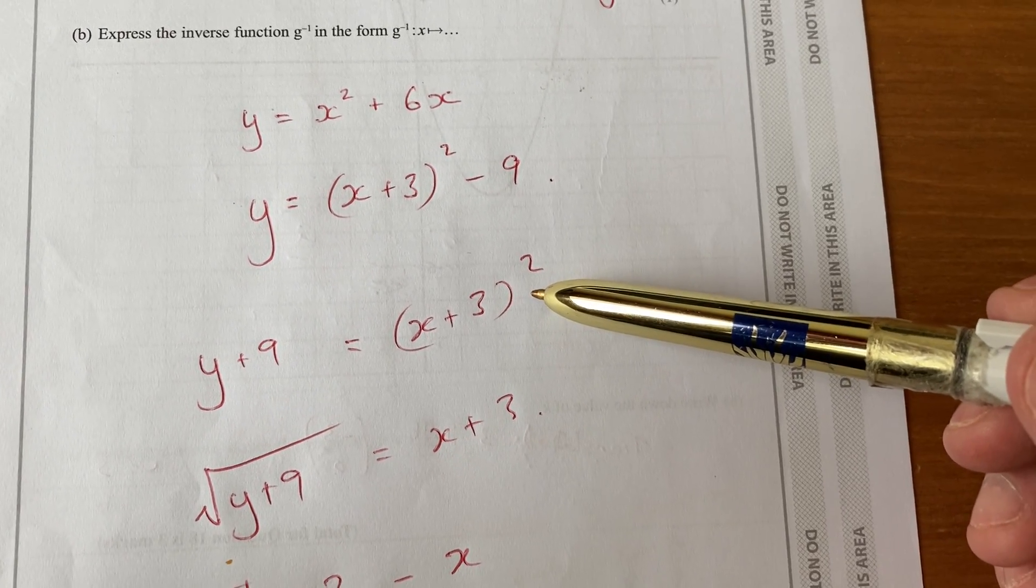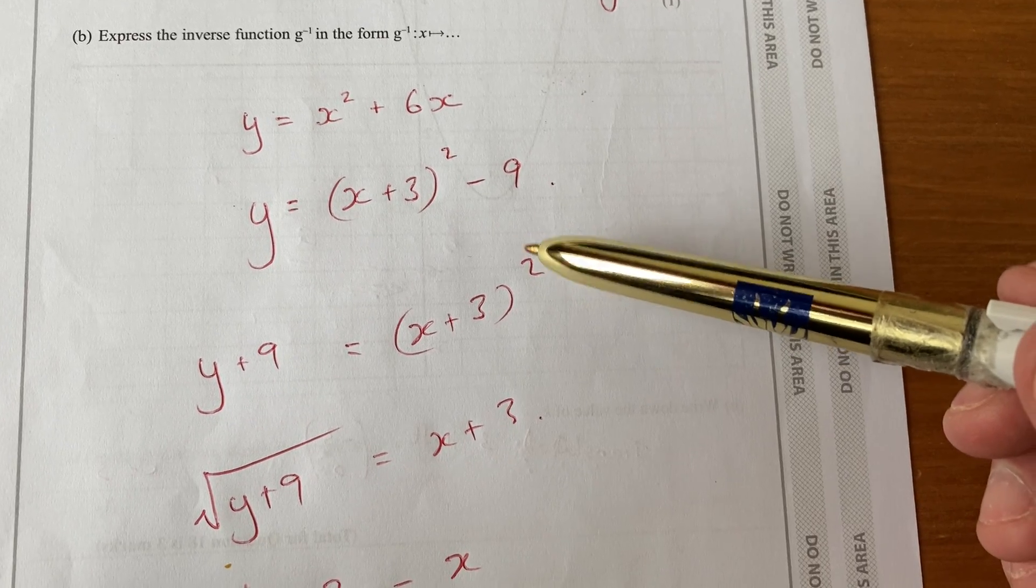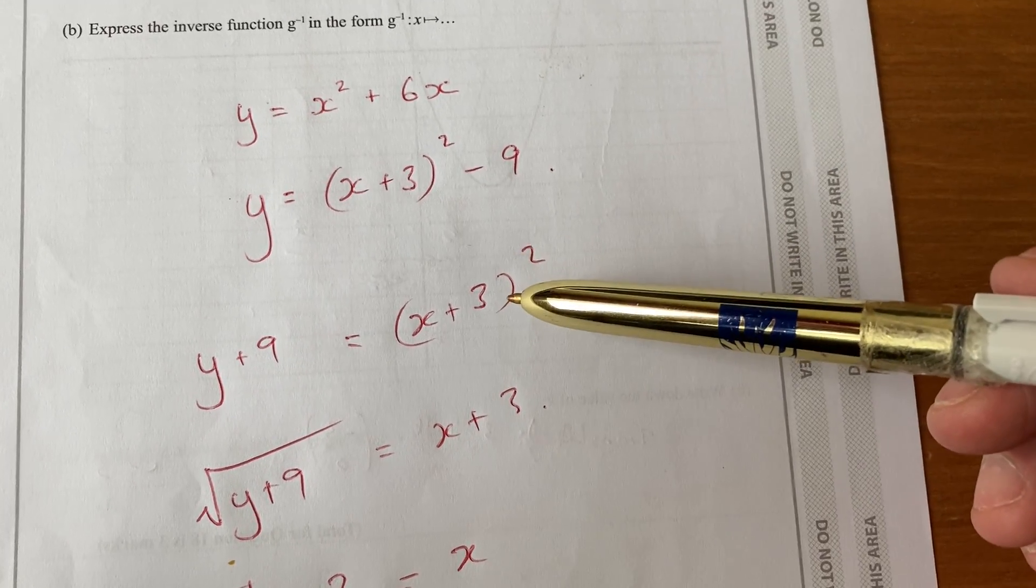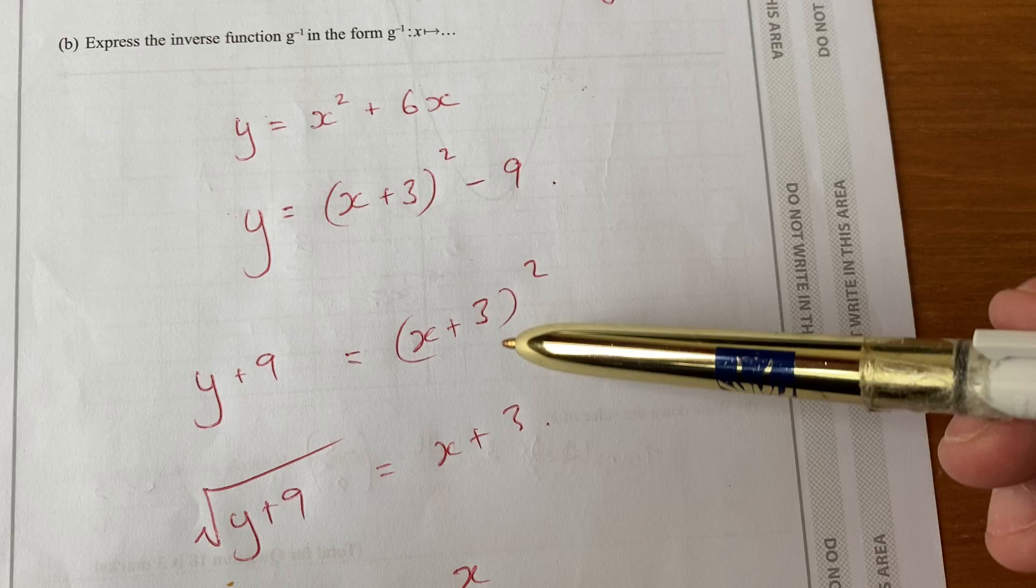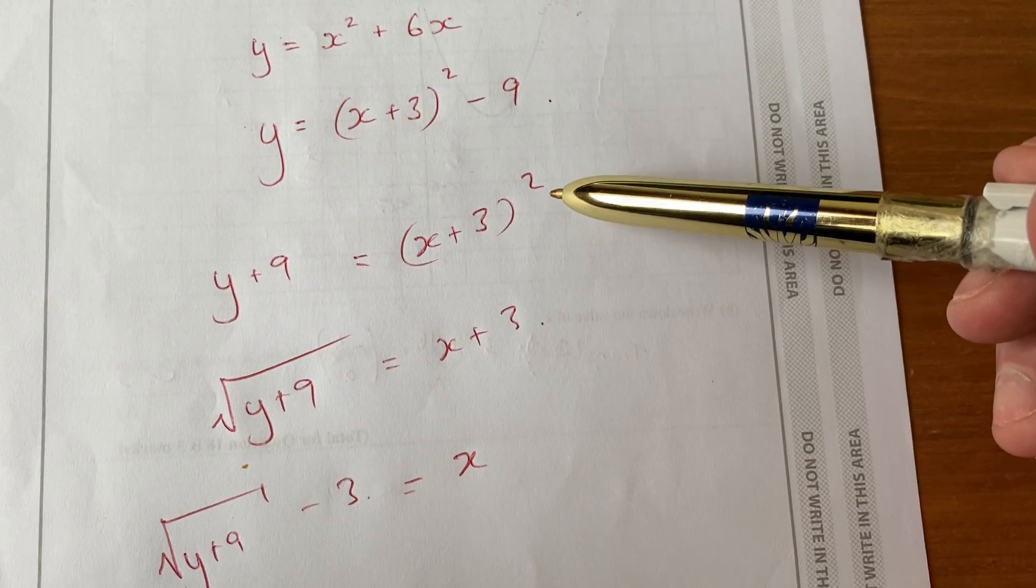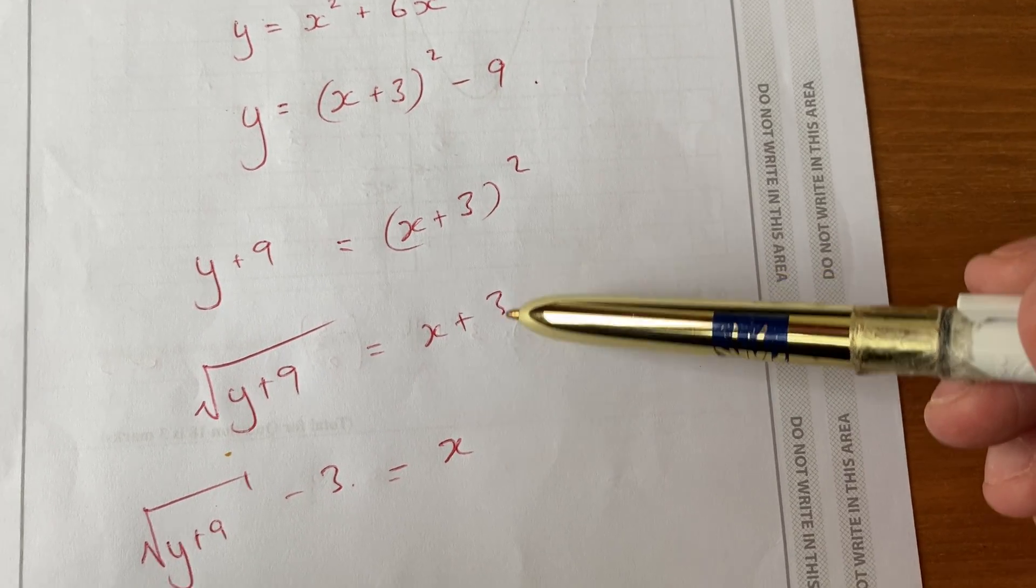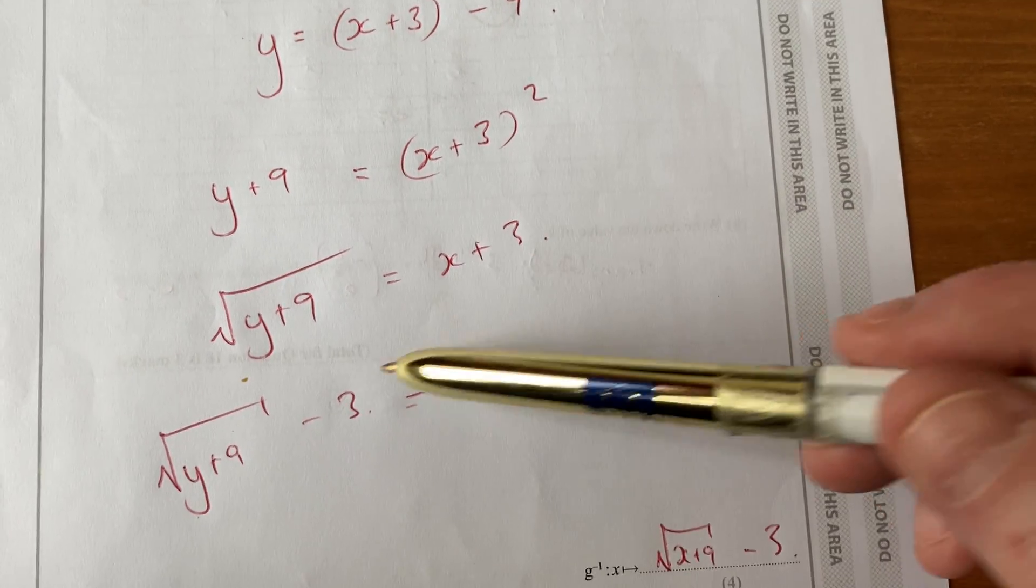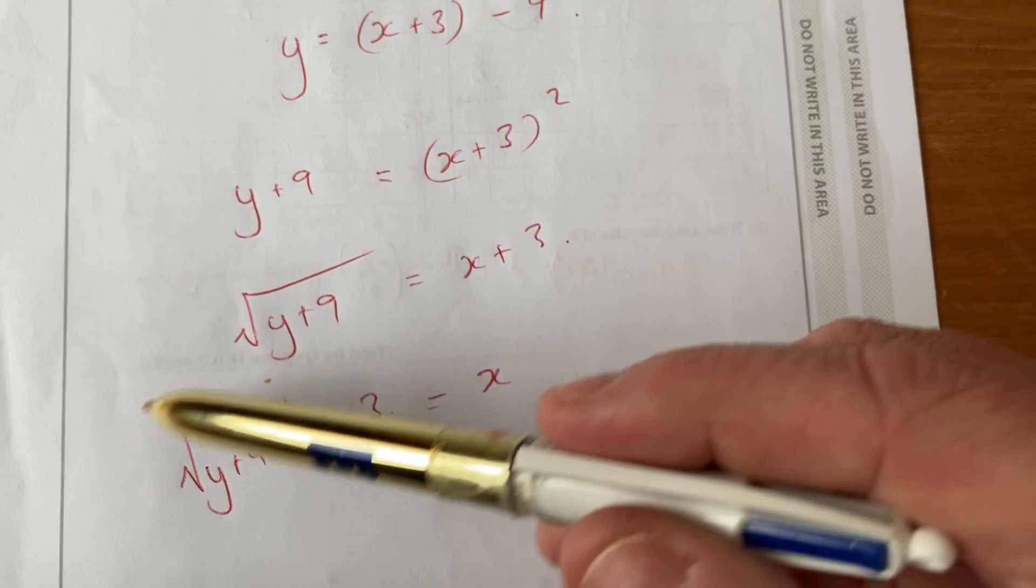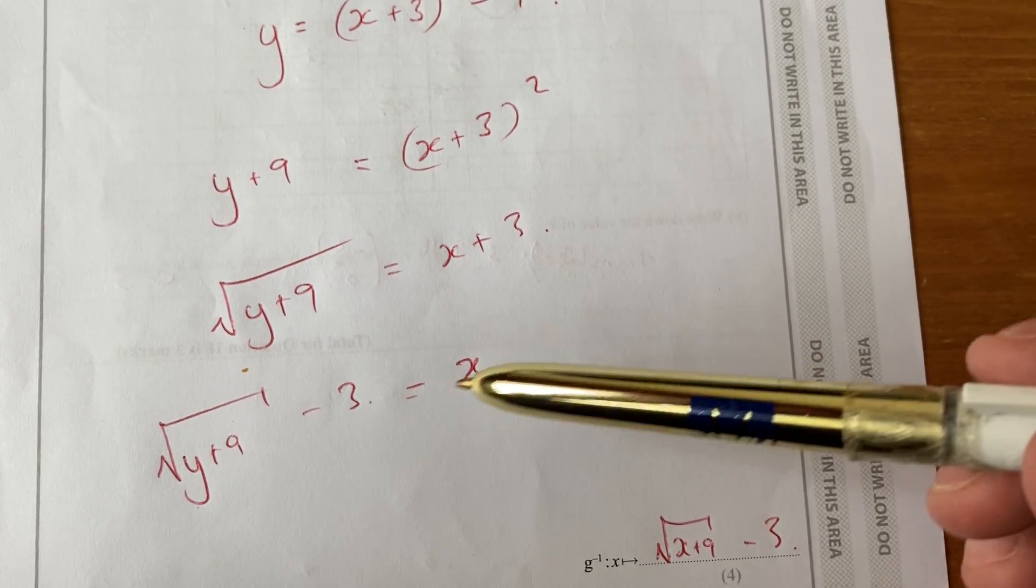By finding the inverse, we need to change the subject. So I'm trying to get the x by itself. To do that, I need to get rid of the square by square rooting both sides. Then I take away the 3 from both sides. This is my change of subject. It's now x equals.